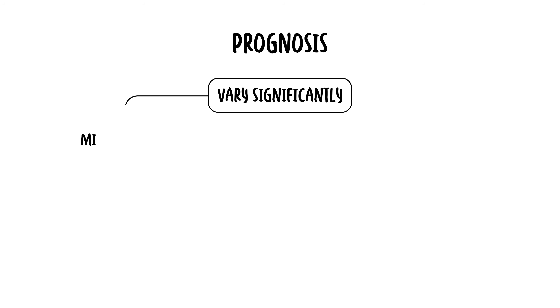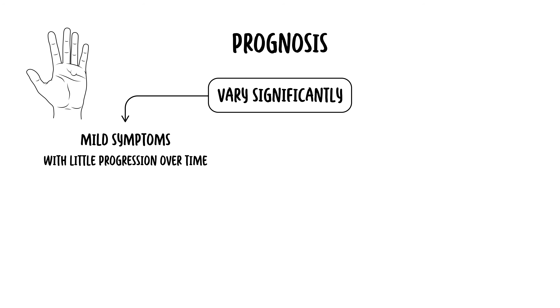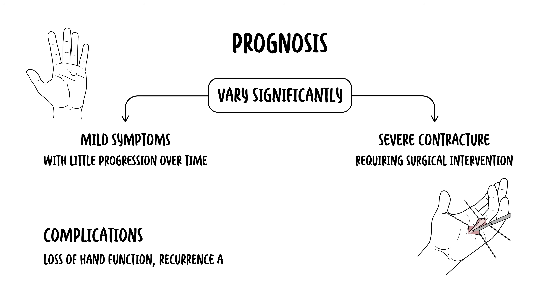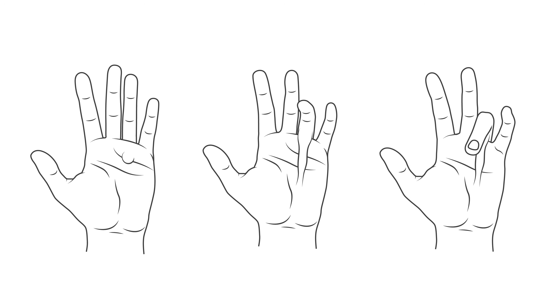The progression of Dupuytren's contracture can vary significantly among individuals. Some may experience only mild symptoms with little progression over time, while others may develop severe contracture requiring surgical intervention. Complications are primarily related to loss of hand function and the potential for recurrence after treatment. In summary, Dupuytren's contracture is a condition that leads to progressive hand deformity and functional impairment through contracture of the palmar fascia. A combination of genetic predisposition and environmental factors are believed to play a role, and treatment options range from observation and minimally invasive procedures to surgery, depending on severity and impact on quality of life.